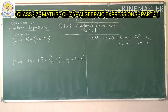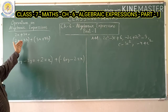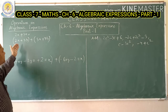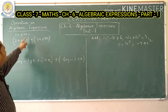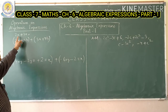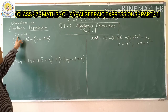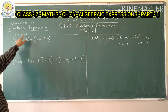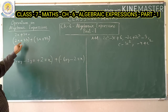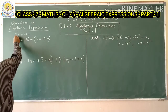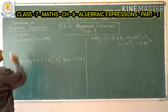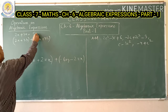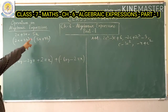Now let's discuss some operations on algebraic expressions. The first operation is addition. For example: 2a plus 3a — these two monomials are added. Since 2a and 3a are like terms, we add their coefficients: 2 plus 3 equals 5. So the result is 5a.